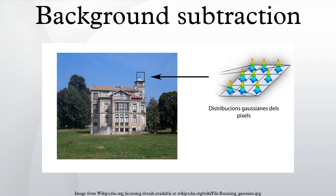Background subtraction, also known as foreground detection, is a technique in the fields of image processing and computer vision wherein an image's foreground is extracted for further processing. Generally, an image's regions of interest are objects in its foreground. After the stage of image pre-processing, object localization is required, which may make use of this technique. Background subtraction is a widely used approach for detecting moving objects in videos from static cameras.